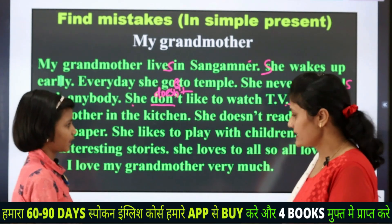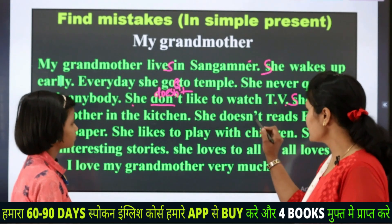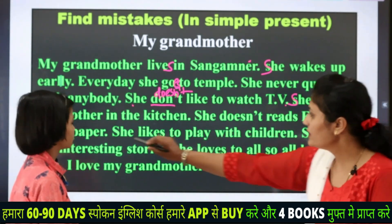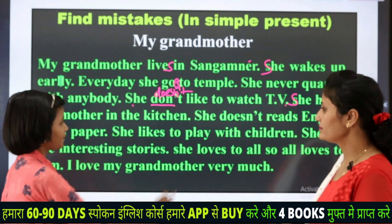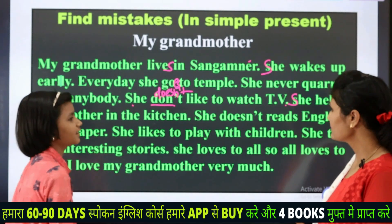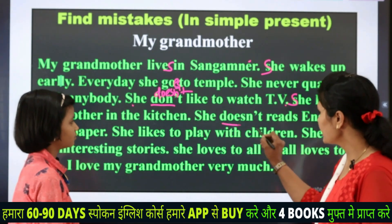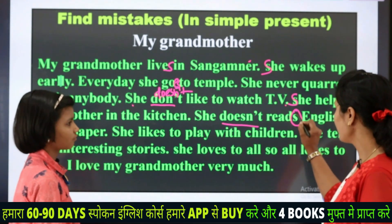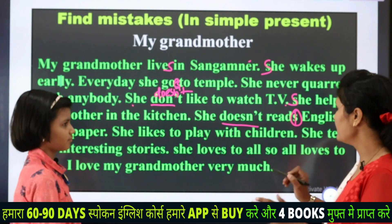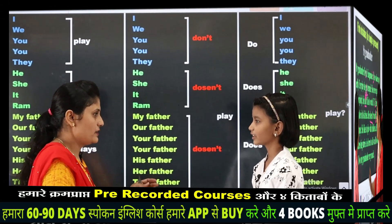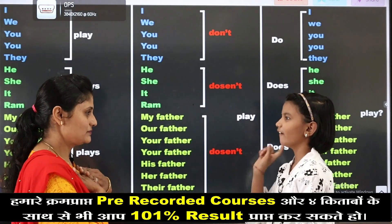Next sentence: She doesn't reads English newspaper — there should be read, not reads, because we have doesn't. Doesn't — we always use the verb in first form, without S. Very good.